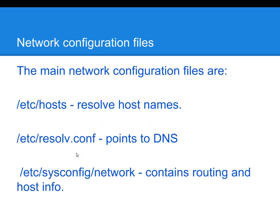You can find some of your networking files in the /etc directory. The first file we could probably find would be called /etc/hosts, which is going to resolve some IP addresses to actual machine names. The second file we can take a look at is resolv.conf, and this file is basically going to point to our DNS. We can also find additional files in the /etc/sysconfig/networking directory, where we can expect to find routing and host information type files.